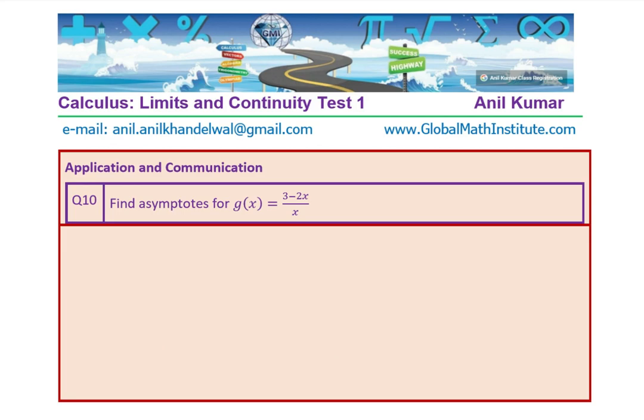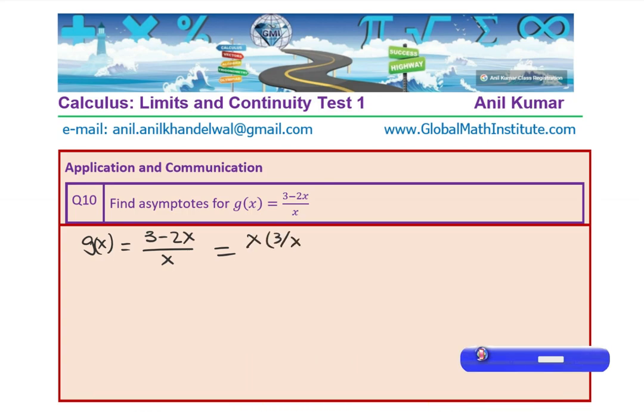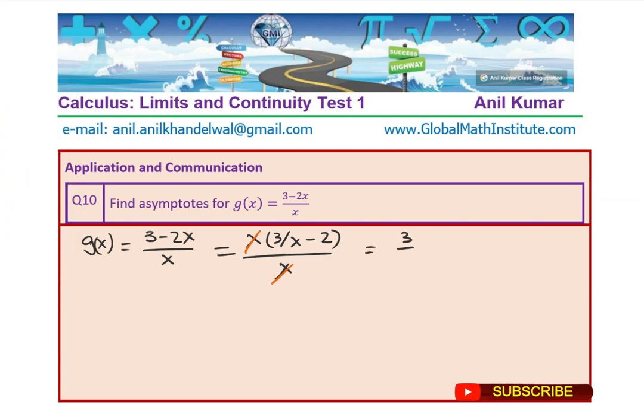Let me rewrite the question here. g of x is equal to 3 minus 2x over x. I can take x common from both numerator and denominator. So I get 3 over x minus 2. And here I have x. Now x and x will cancel away.